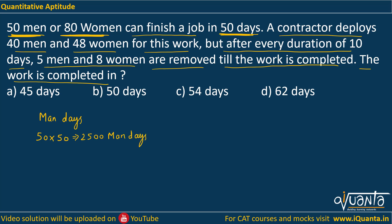We have also been given that 80 women complete the same work in 50 days. So if I write down the work in terms of women days, that will be 80 women multiplied by 50 days, which equals 4000 women days. So 2500 men days of work and 4000 women days of work — both are equal.